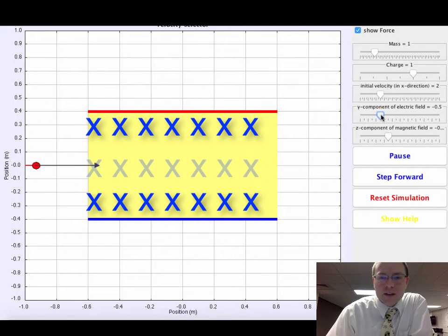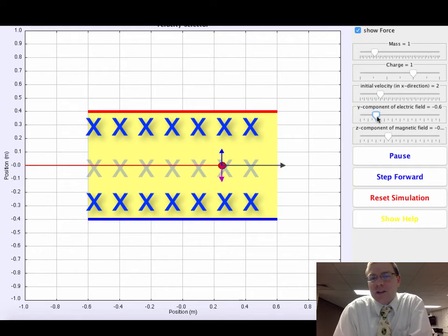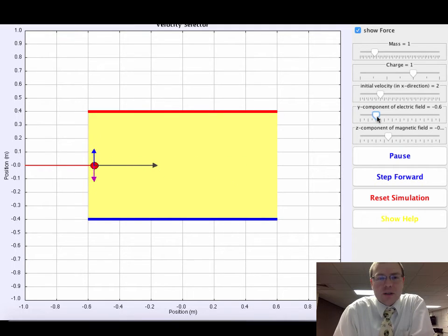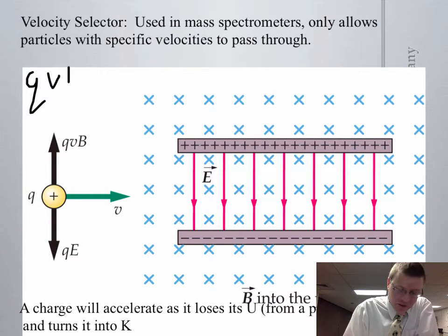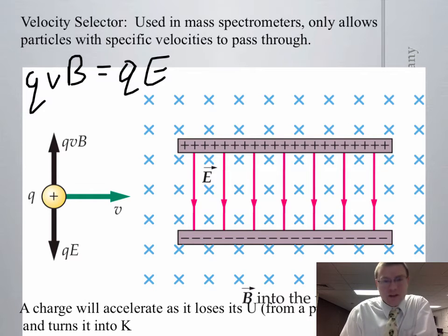I'm still not perfectly on that line, so let's increase the electric field strength. Increasing the electric field strength makes the electric force a little bit stronger, and now any charge that enters this magnetic field and electric field that are crossed passes straight on through with a particular speed. So that means the force from the electric field and the force from the magnetic field must be equal.